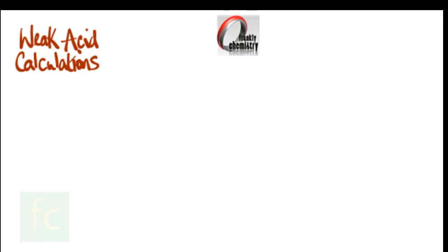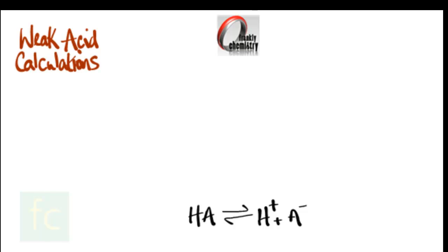Hello and welcome to this video in which I take you through the main calculations associated with Ka, the so-called acid dissociation constant, used to determine the pH of weak acid solutions. We'll be looking solely at monobasic acids, and at the bottom you can see the equilibrium equation for the dissociation of a weak monobasic acid represented by HA.